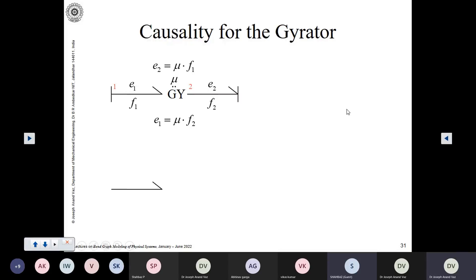And if you do the reverse, if you provide it with effort, then it will output flow. So, this is the causal relationship for the gyrator, causal pattern for the gyrator element.